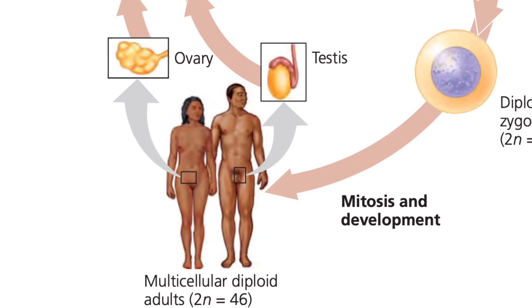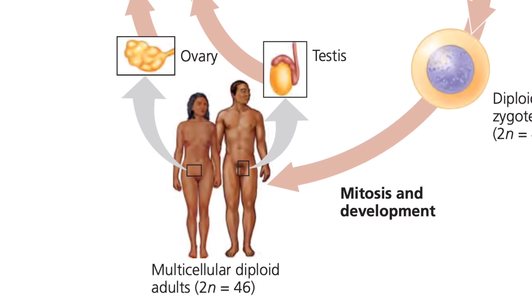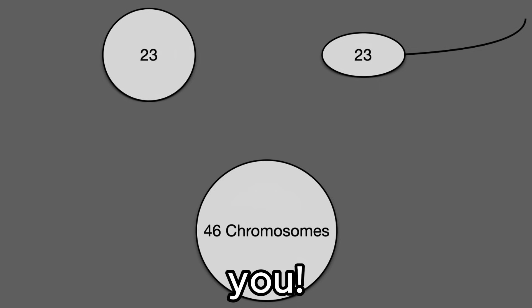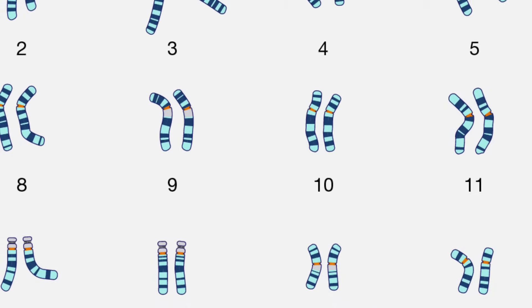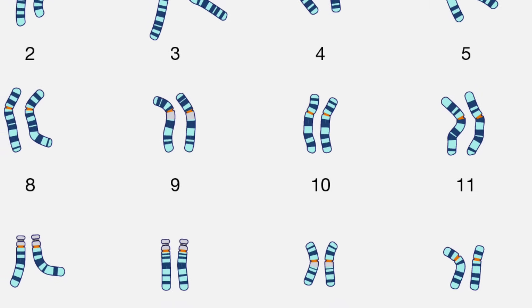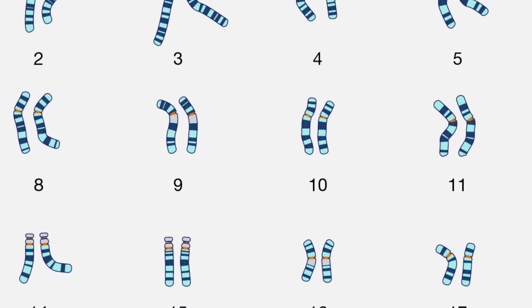But the question is, why do we have pairs of chromosomes? Why not just 23 or 46 different chromosomes? The reason is that we are sexually reproducing organisms and, as such, received a set of 23 from our moms and a set of 23 from our dads. In essence, each chromosome of any given pair in our genome came from either our mom or our dad.